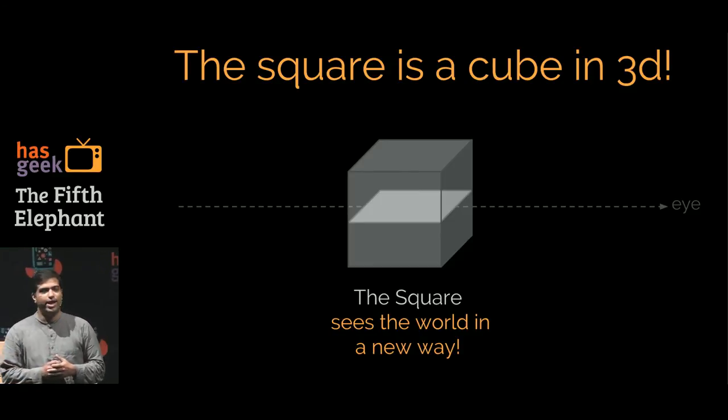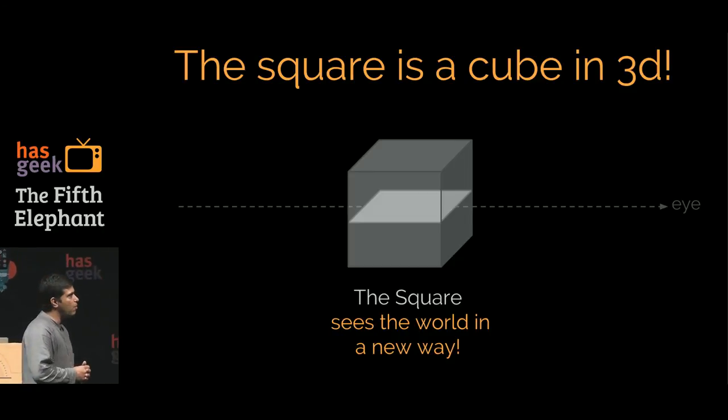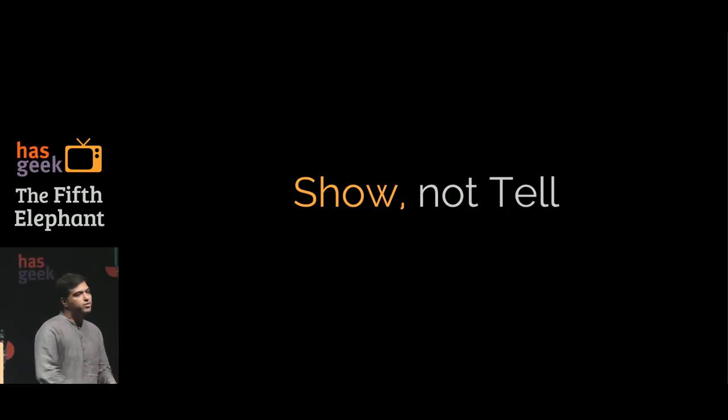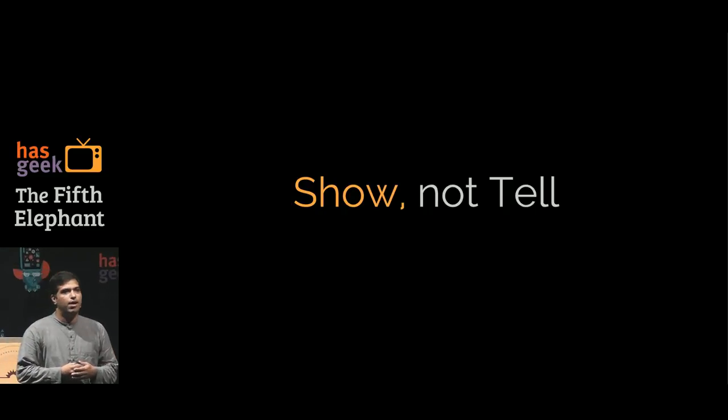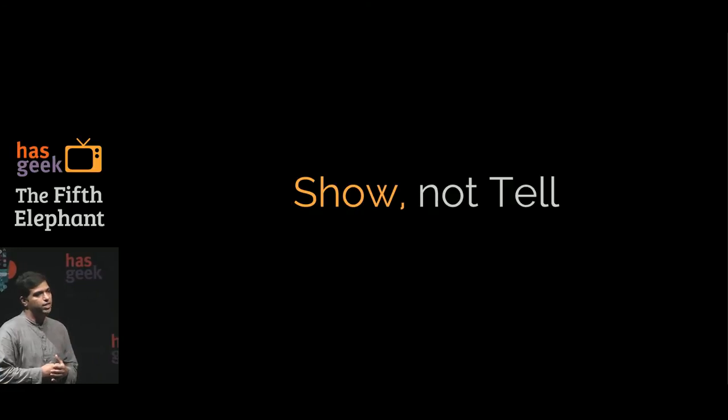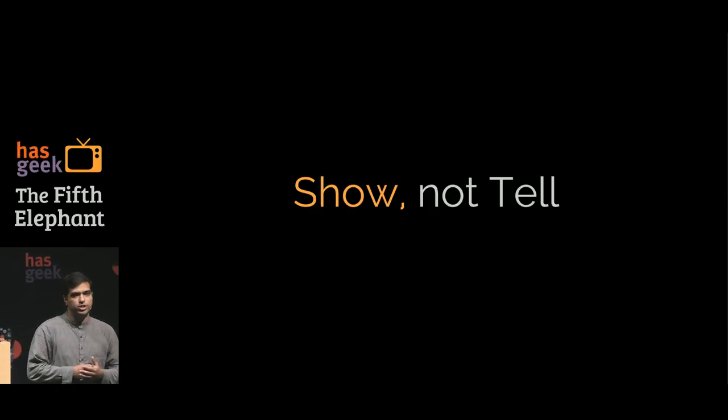The square is not able to understand how the sphere is able to do this. No matter how much he explains to the square, he cannot grok the concept of the third dimension, till literally the sphere actually pulls him out and shows him that there is this third dimension. It's a beautiful book. And that's what I'm going to try and do here. I'm going to show you as much as possible rather than tell you, and show you basic principles about how to think about visualization and how to think about doing that in multiple dimensions.